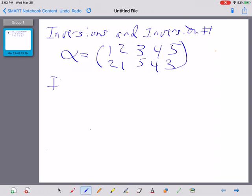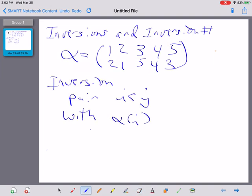So the first thing is I want to define something called an inversion. An inversion is just a pair of i less than j with alpha of i bigger than alpha of j. So the top row has the two numbers in order, and the bottom row has the two numbers in the wrong order.